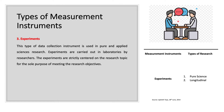The third type of measurement instrument is experiments. This type of data collection instrument is used in pure and applied sciences research. Experiments are carried out in laboratories by researchers. The experiments are strictly centered on the research topic for the sole purpose of meeting the researchers' objectives. Types of research include pure science and longitudinal.